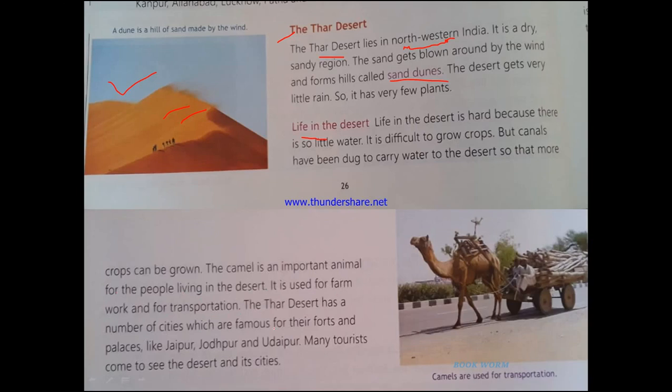The Thar Desert has a number of cities which are famous for their forts and palaces, like Jaipur, Jodhpur, and Udaipur. Many tourists come to see the deserts and its cities.